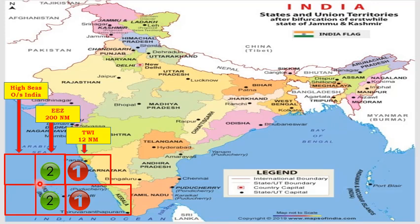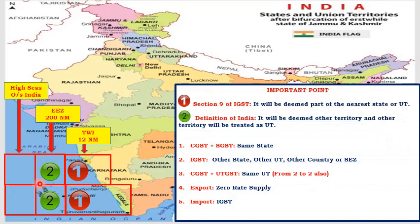So EEZ is only 188 nautical miles. But again, the question arises: for GST, what do we consider the EEZ — is it a state, UT, or something else? Please note this area is defined as 'other' in the definition of India. And for GST, this 'other' will be considered a different UT. GST has four types of taxes: first is IGST, second is CGST, third is SGST, and fourth is UTGST.